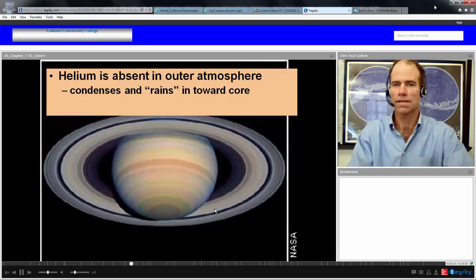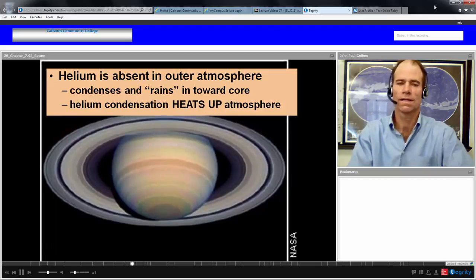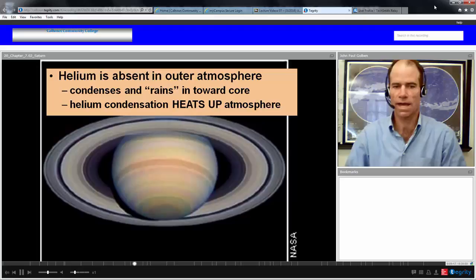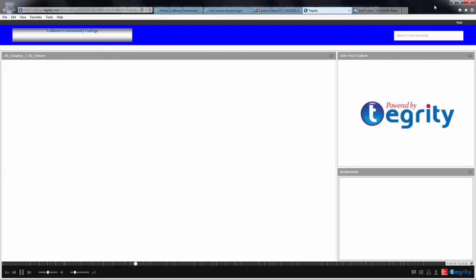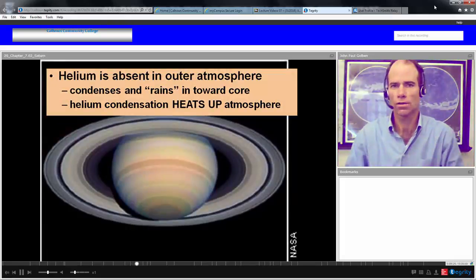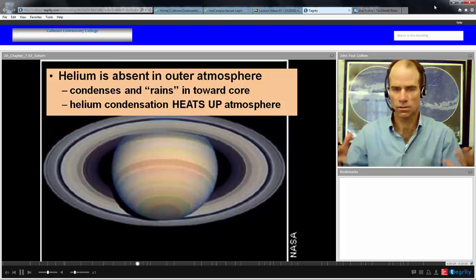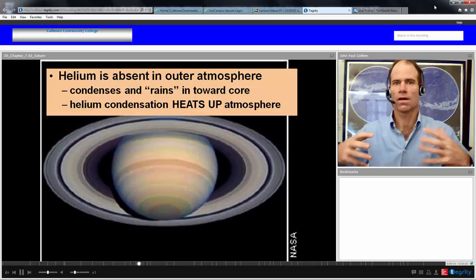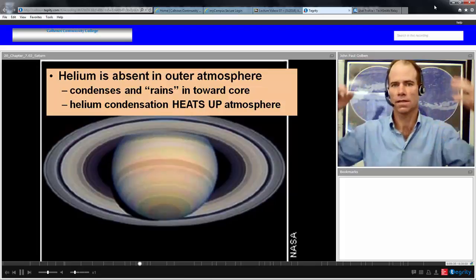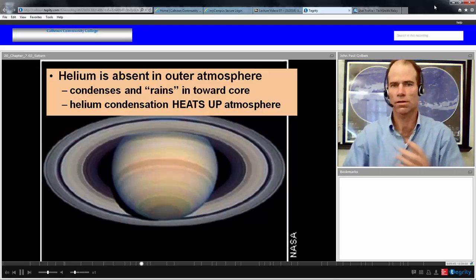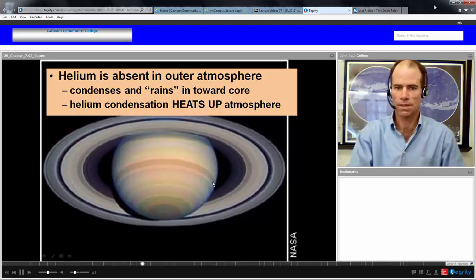Helium is absent in the outer atmosphere because it condenses and rains inward toward the core. This allows Saturn's atmosphere to heat up, and Saturn emits more heat due to this condensation of the helium gas. This is similar to what Earth experiences in its water condensation. Near the equator, as heat is hitting, water evaporates and then condenses and releases more heat, helping to fuel the structure of storms like hurricanes. The same sort of thing is happening on Saturn.